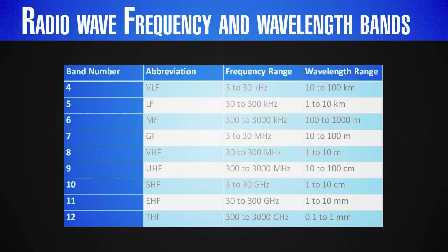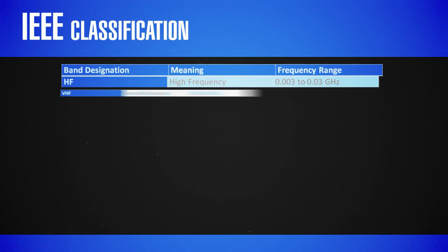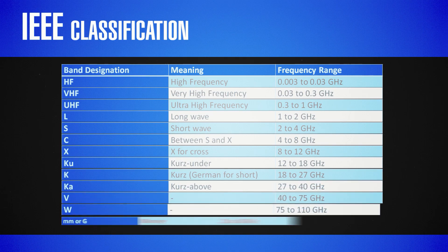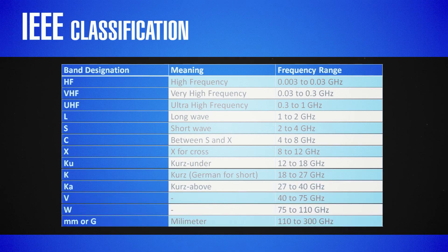The more general classification is due to the ITU, or the International Telecommunication Union, and can be seen in the following picture. As you can see, here we have the band number, abbreviation, frequency range and wavelength range. All this information can be found online on the ITU website. Radio waves used for satellite communication are mostly in the range between 3 and 30 GHz. Diving one level deeper, we find that it is also divided in a more detailed band. This is the classification imposed by the IEEE, or the Institute of Electrical and Electronic Engineers, where we can see the frequency band, the range in GHz and the application. These are the band designations we will be using from now on.